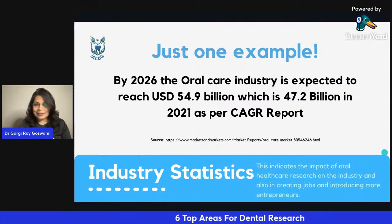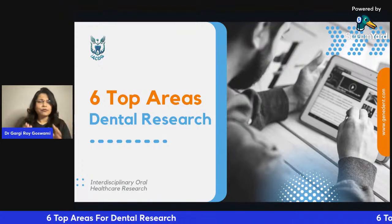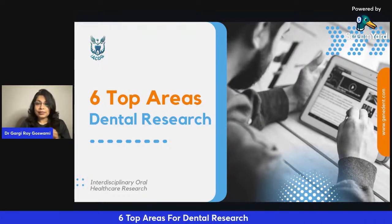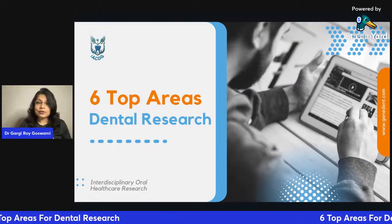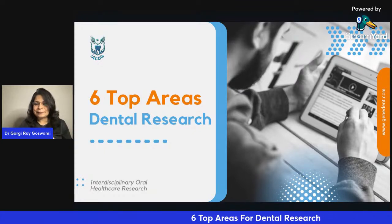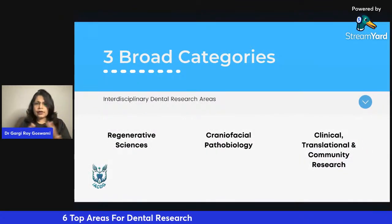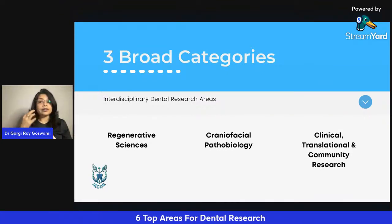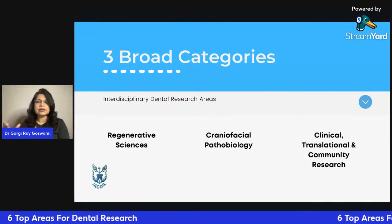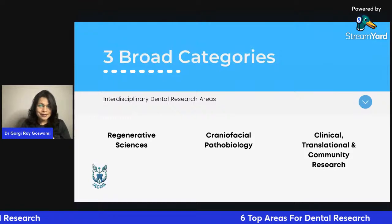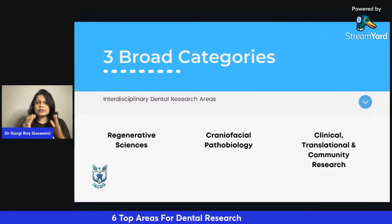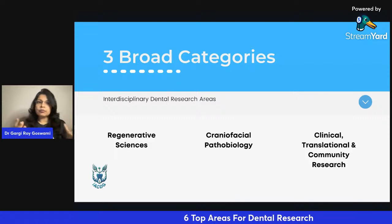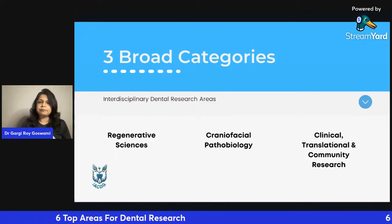Let me take you through some very interesting areas — some you may have heard of, some you might not. I'm going to share six top areas of dental research, focusing on interdisciplinary oral healthcare research. We can categorize dental research under three broad categories: regenerative sciences, craniofacial pathobiology, and clinical translational and community research. I will give you two examples from each of these categories that are not widely spoken about.